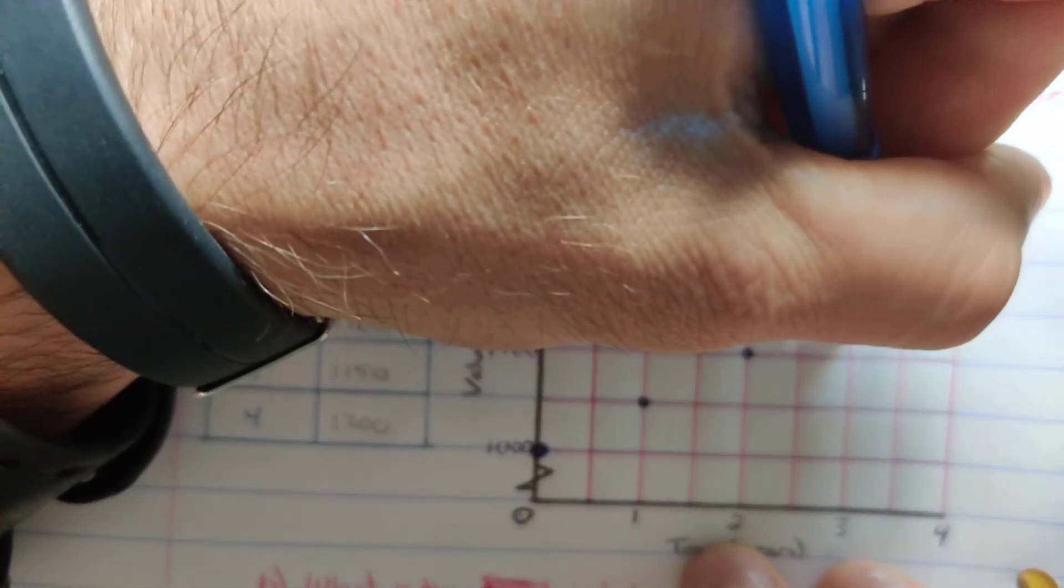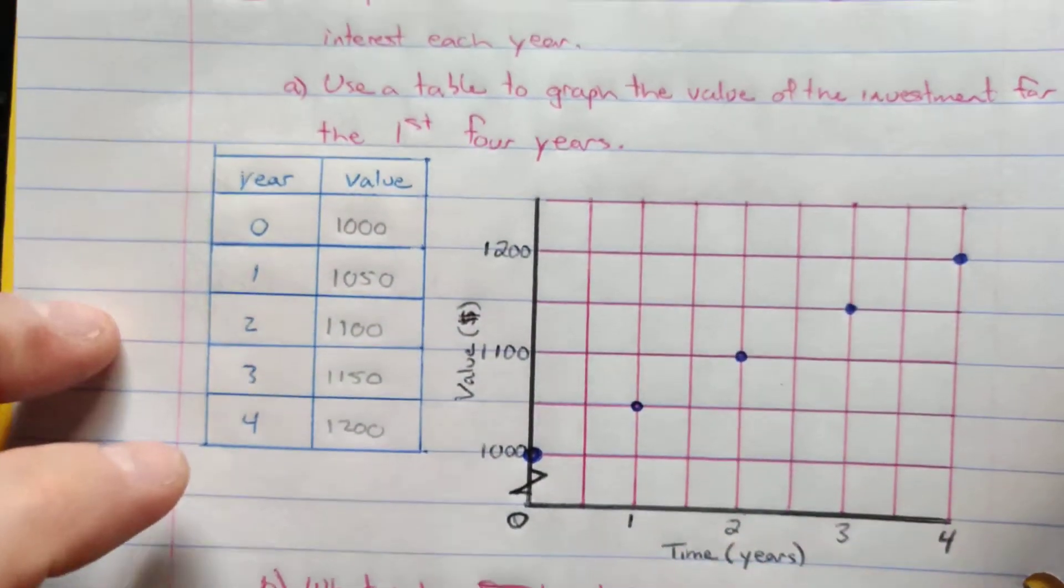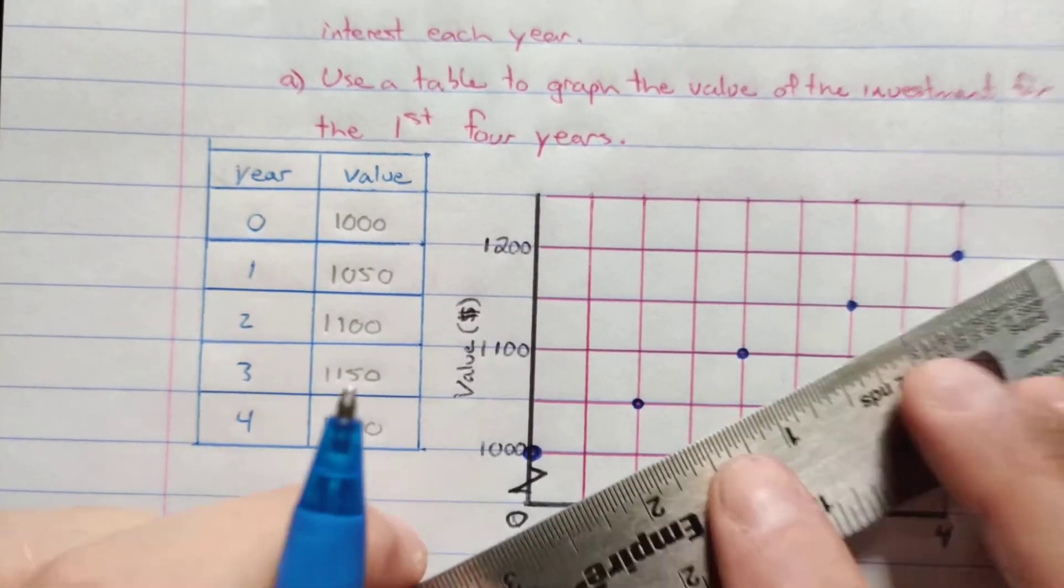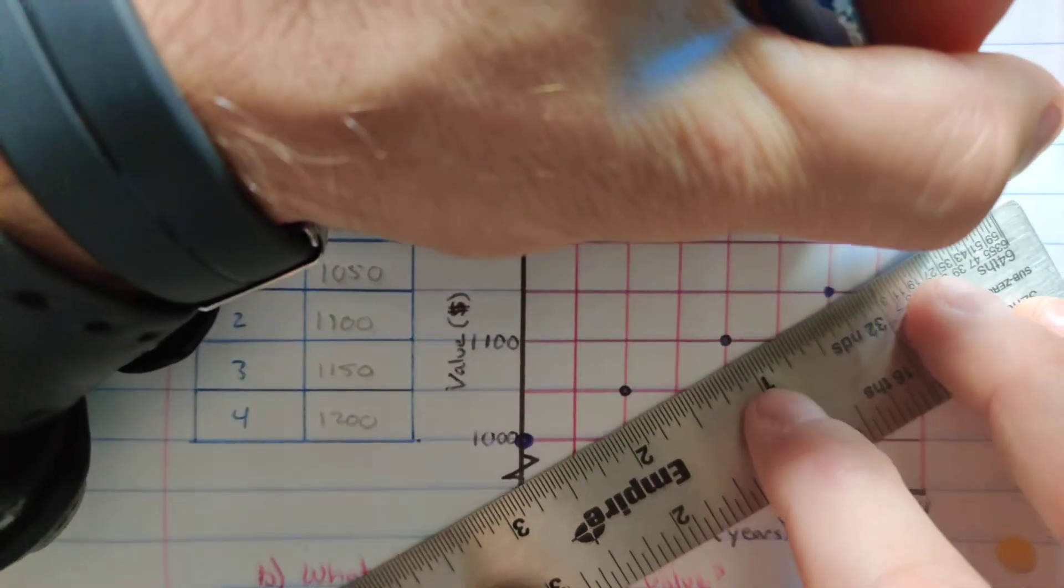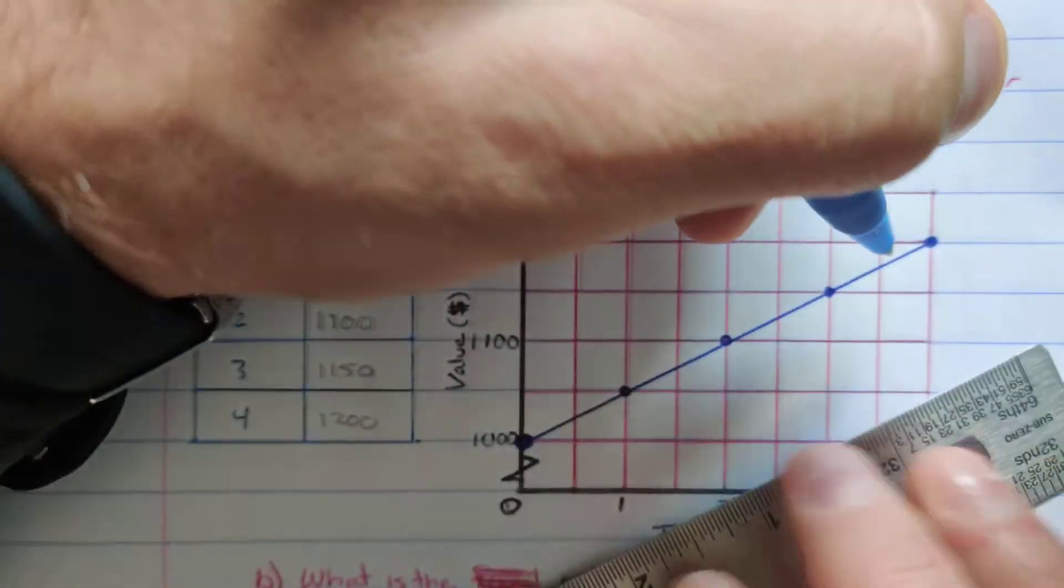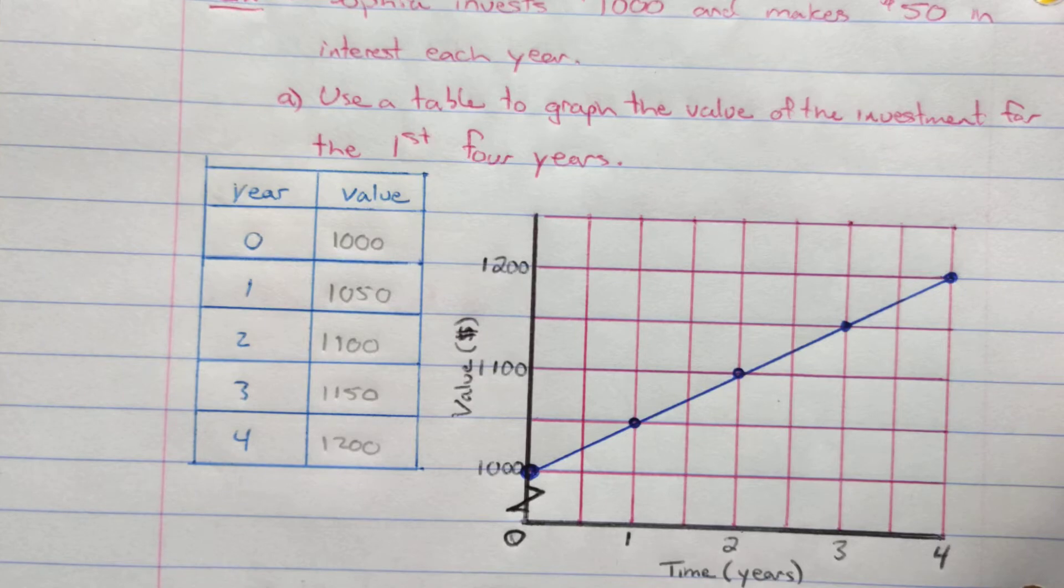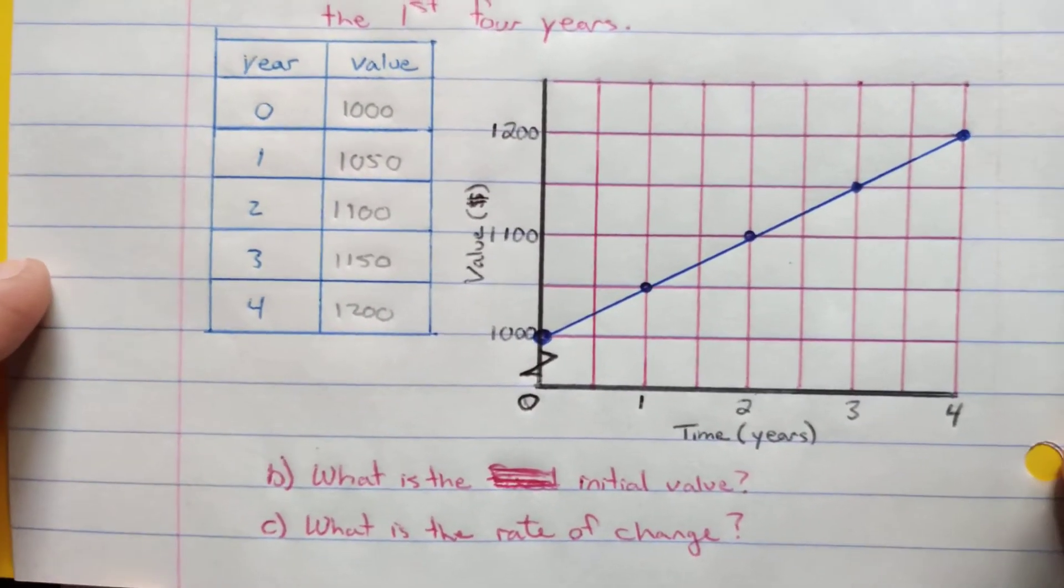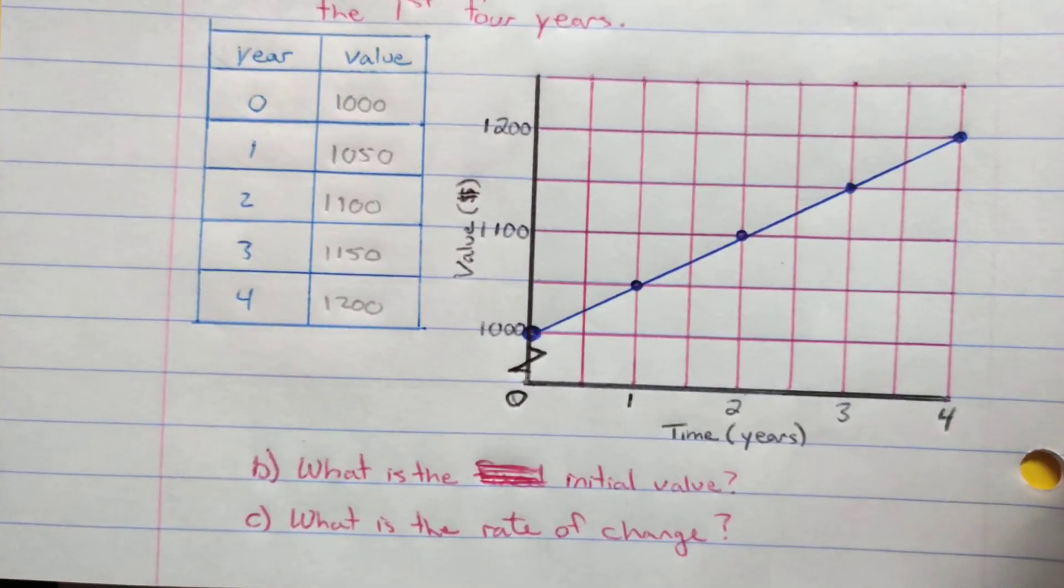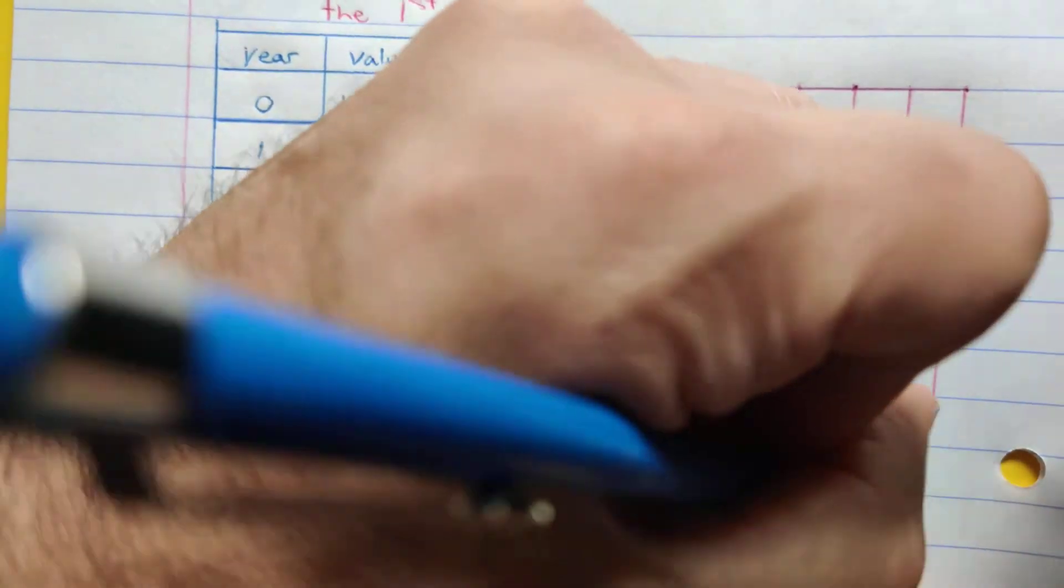Three, 1,150. And four, 1,200. So I plot my points there, and they all line up neatly in a nice pretty line. So the difference here is that the initial value is not at zero. So it's partial variation. It's a line that does not go through zero, so it's partial variation. The initial value here is at 1,000.